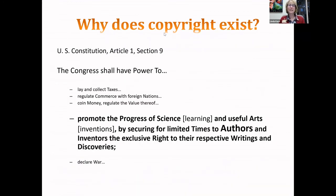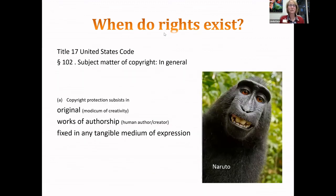Why does copyright exist? The Constitution gives Congress the power to establish the rights of authors and inventors to their own work, right between their authority to collect taxes, coin money, and declare war—so obviously they thought copyright was pretty important. Copyright protection subsists in an original work, meaning there is some creativity involved, a human author or creator, fixed in any tangible medium of expression such as digital, film, or paper.